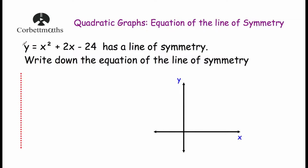We want to find where this graph crosses the x-axis. To find where a quadratic crosses the x-axis, the y will be 0. So we write 0 equals x squared plus 2x minus 24. To find the values of x we're going to solve this equation by factorising it.